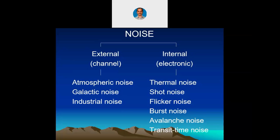The internal noises or electronic noises are thermal noise, shot noise, flicker noise, burst noise, avalanche noise, and transit time noise. We will not deal with all these noises in detail, but we will specifically discuss only thermal noise and shot noise later on.